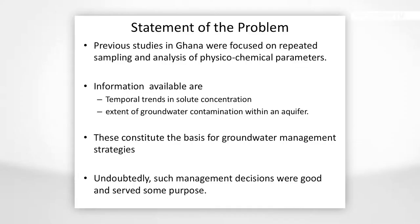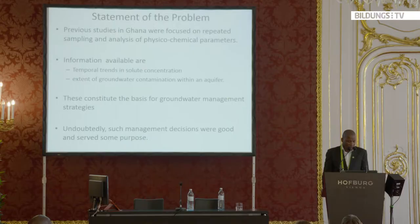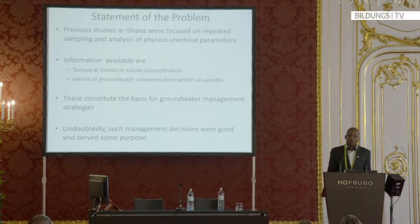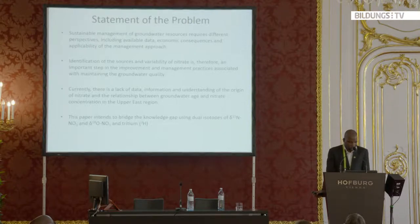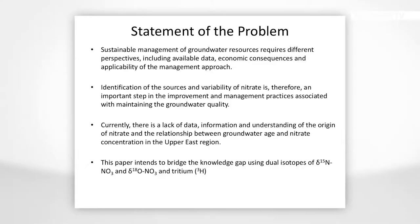What is the situation now? Because a lot of studies have been done on groundwater quality issues, we have information on solute concentration and temporal variation over many years. What is not known is where the pollutants are coming from. This information is important because it gives us an idea of the amount of pollutant and its potential impact on human health. Currently, there is also no data on understanding the origin of nitrate and the relationship between groundwater age and nitrate contamination in the area.